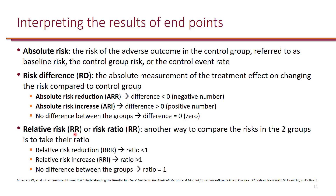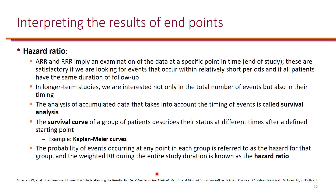In a ratio, you're dividing the number of events in each group. You can have relative risk reduction, relative risk increase, or no difference — and because we're looking at a ratio, one represents no difference. While risk difference and risk ratio are relatively easy to calculate, hazard ratio also takes into account the time to event. This analysis is referred to as survival analysis, and one way to visually show these analyses is using Kaplan-Meier curves.